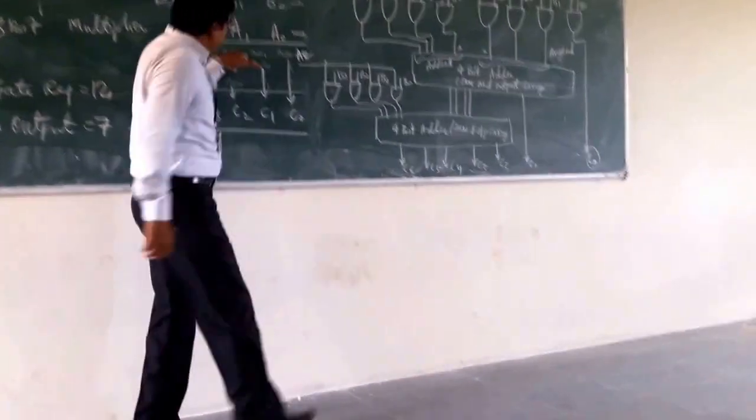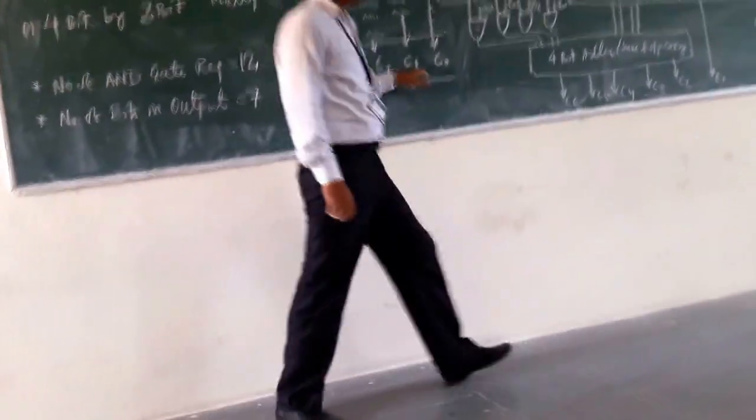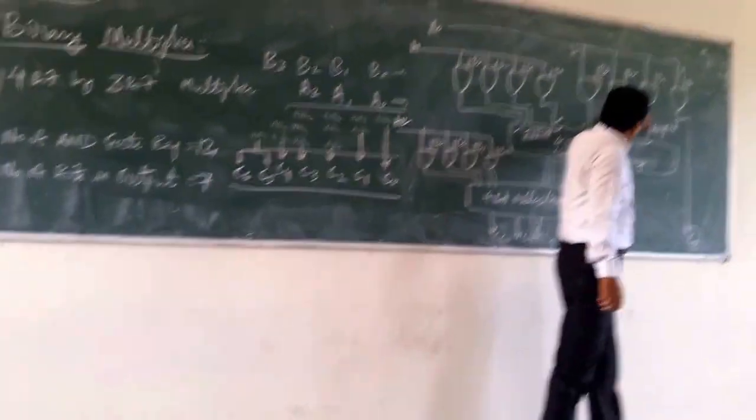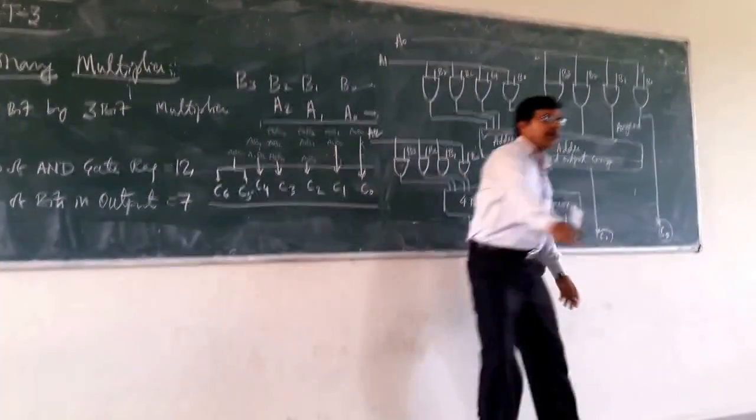Next, we are having the A0 B1, and A1 B0. This is having your C1. So these two are coming here, and from there we are going to get the C1.